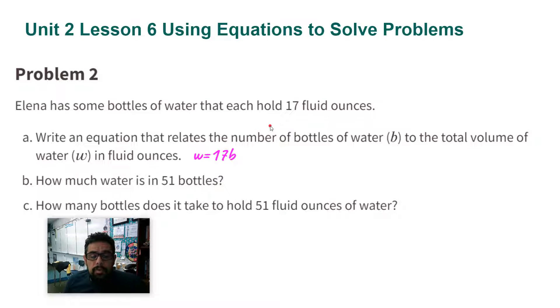Part B: How much water is in 51 bottles? So here I'm going to multiply 17 times 51. I'm using the equation by labeling W equals 17 times 51. Now I multiply that out and I get 867 ounces.